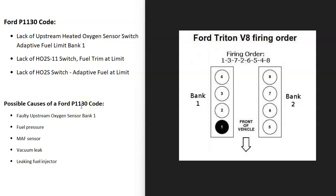Today I'm talking about a Ford with the P1130 code — what it is and how you go about fixing it. Depending on the scan tool you could get different definitions, but most commonly you'll get the definition of a lack of upstream heated oxygen sensor switch adaptive fuel limit bank one.